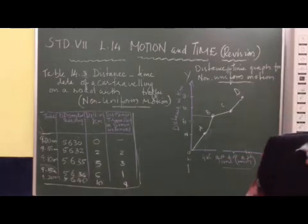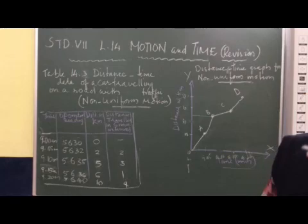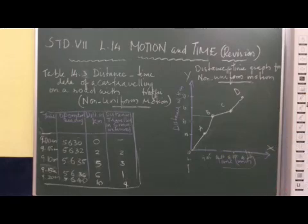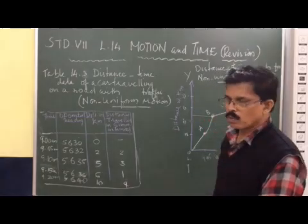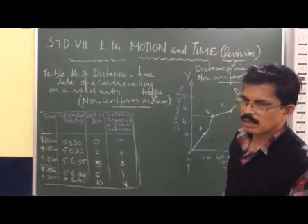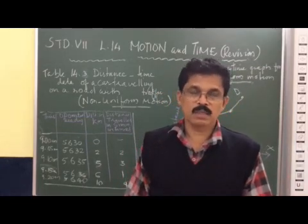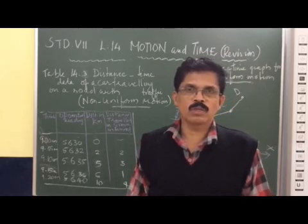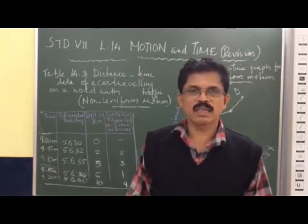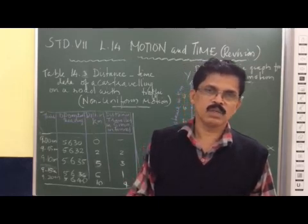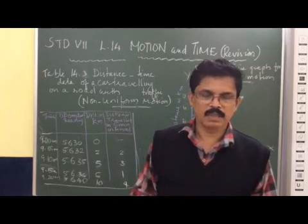So, what is non-uniform motion? When a body travels different distances at different intervals of time, or when the speed and direction of a body is not constant, that is called non-uniform motion. In this graph, we will never get a straight line because the distance traveled is not uniform. Thank you very much.